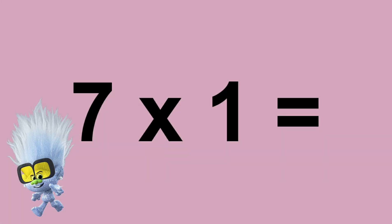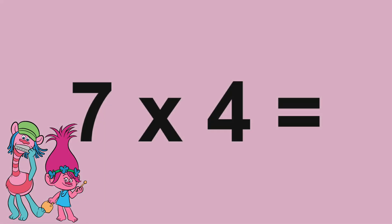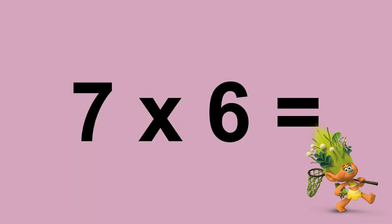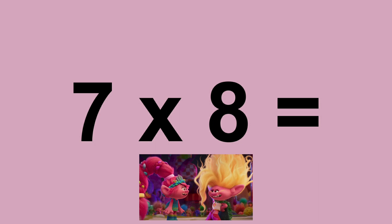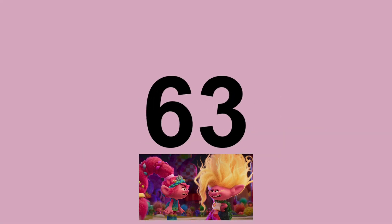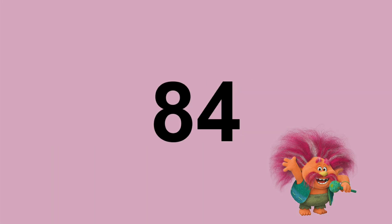Seven times ten equals thirty-two. Seven times seven equals thirty-two. Seven times ten equals forty-two. Seven times six equals forty-two. Seven times seven equals forty-nine. Seven times eight equals fifty-six. Seven times nine equals sixty-three. Seven times ten equals seventy. Seven times eleven equals seventy-seven. Seven times twelve equals eighty-four.